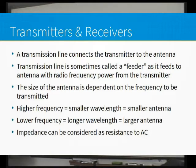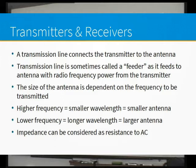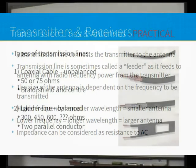We talk about impedance - we consider it to be resistance. It's measured in ohms, but it's resistance to alternating current, not direct current. So when we talk about impedance, it's still measured in ohms, and it's resistance to AC.